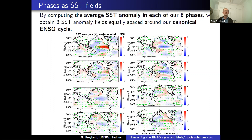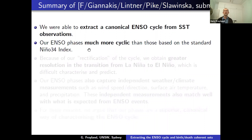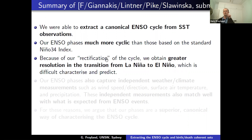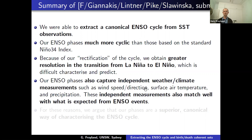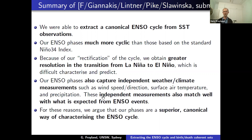In summary: we extracted a strong canonical ENSO cycle from SST observations. Our phases are much more cyclic — evolving from one wedge to the next in a far more consistent way than you would get from the standard Niño 3-4 index. Because we rectified the cycle at constant speed, we get greater resolution in the complicated transition from La Niña back to El Niño, which is hard to characterize. The independent measurements — wind speed, surface air temperature, precipitation — also match well with expected ENSO behavior, making our phases superior canonical descriptors of the ENSO cycle.